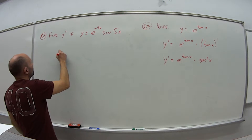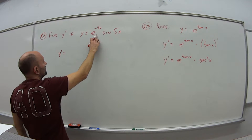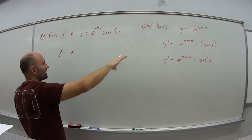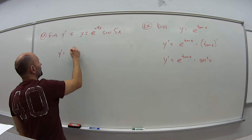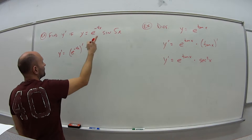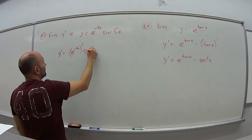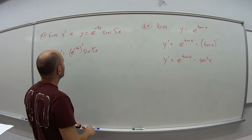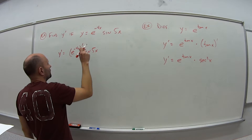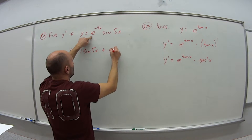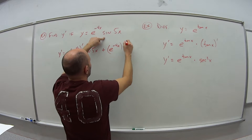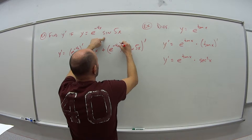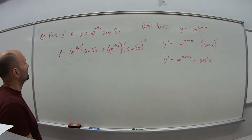y prime equals the derivative of the first piece times the second, plus the first times the derivative of the second. So it's the derivative of e to the minus 4x, times sine of 5x, plus e to the minus 4x times the derivative of sine of 5x. Let me write that out first, then I'll take the actual derivatives.